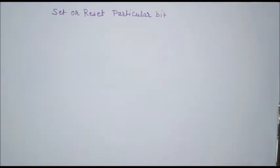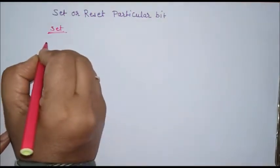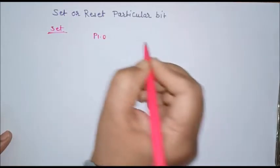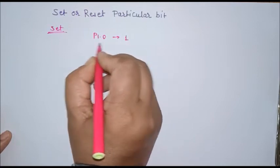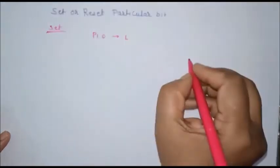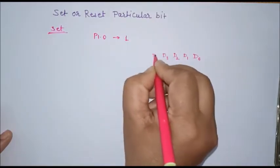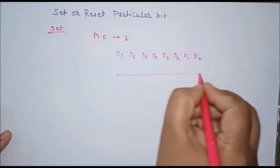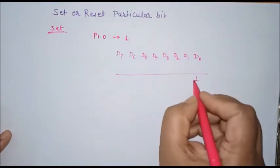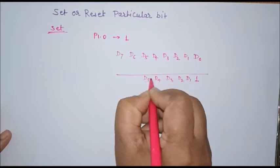How to set or reset a particular port bit. For example, suppose we want to set bit p1.0 — that means we want to write logic one at port bit p1.0 without affecting other port bits of port 1. Suppose on port 1 this is some data, and after performing some operation we want to save the zero bit while all other bits should remain as they are.